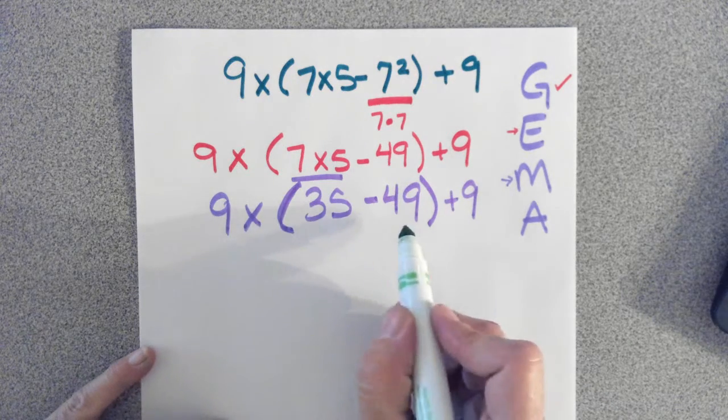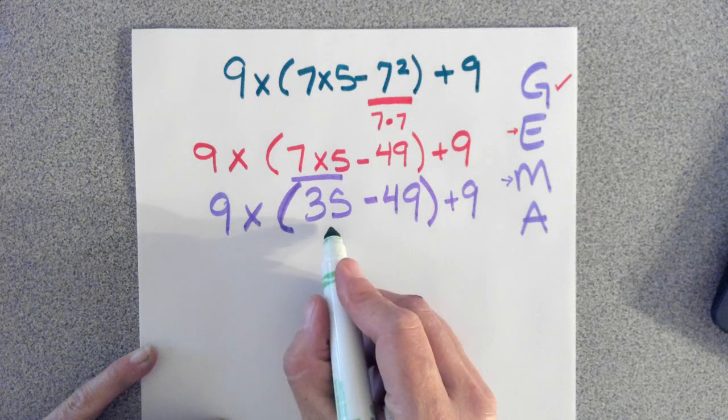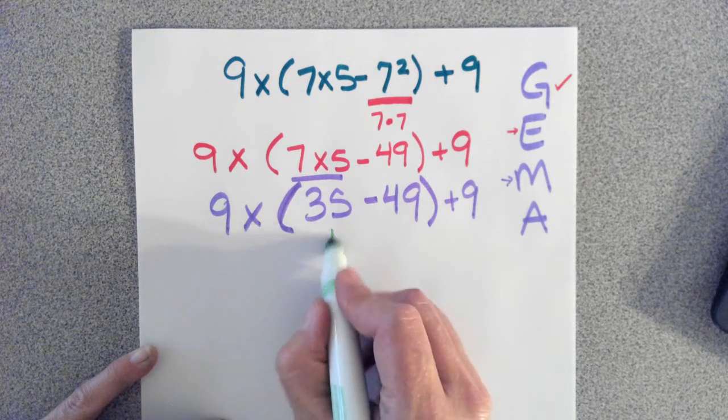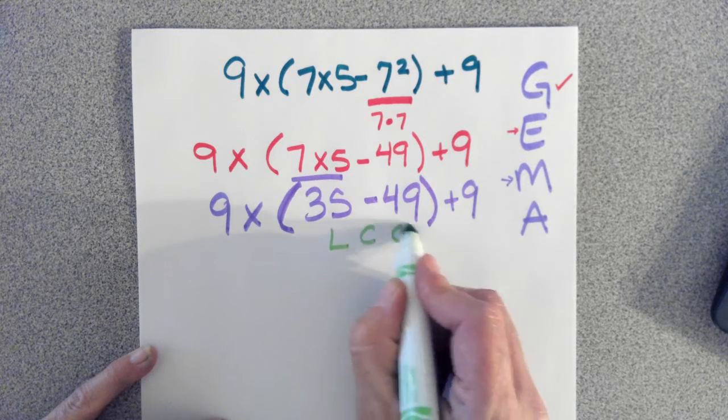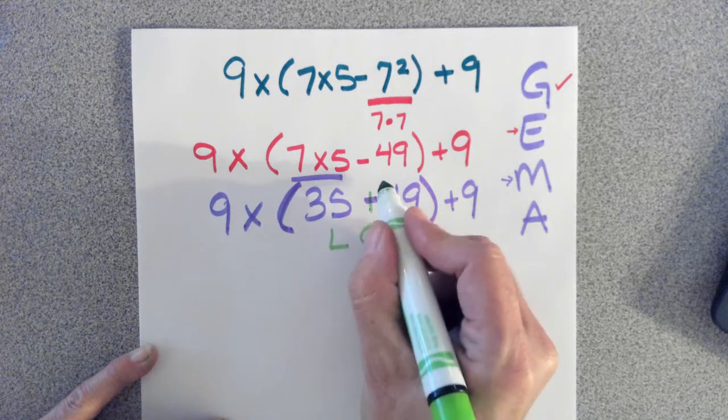Okay, still inside the grouping, we've got 35 minus 49. If I have 35 and I take away 49, I'm not going to have enough. Don't forget our strategy when subtracting. We can LCO, which is leave it, change it, opposite.